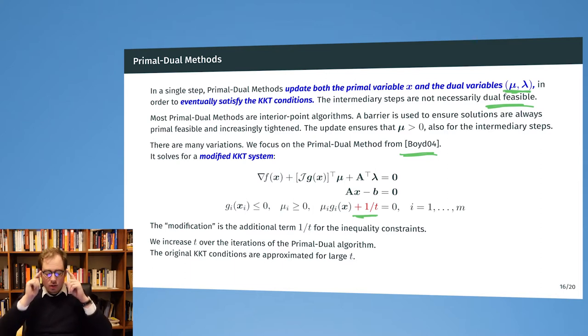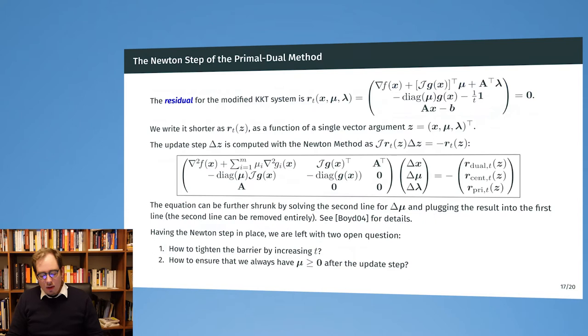Now we look at the so-called residual. For a current solution, the residual describes how close we are to solving this modified KKT system. What we want to do is achieve this zero—this is obviously not always the case, but we want to achieve that, so we want to get this residual to get to zero.